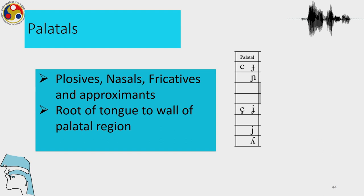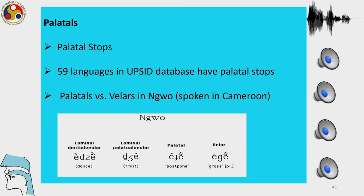The palatal sounds — the root of the tongue targets the wall of the palatal region. Stops, nasals, fricatives, and approximants can be produced in the palatal region. Palatal stops are possible in languages; of the 317 languages, 59 languages have palatal stops. We will play these sounds from Ngo, spoken in Cameroon. In Ngo, we have a distinction between laminal dental-alveolar, laminal palatal-alveolar, palatal, and velar — four places of articulation which we will play now.